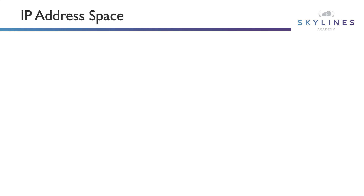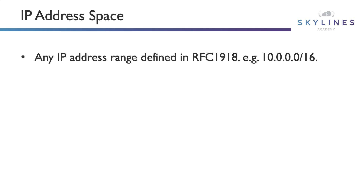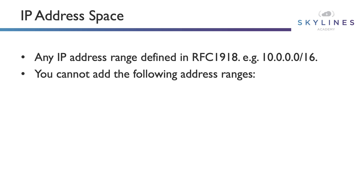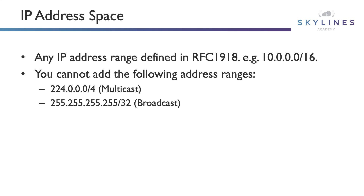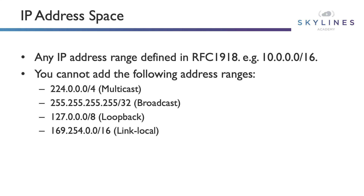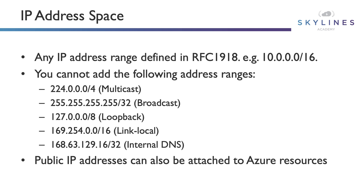Let's now talk about the IP address space in a little bit more detail. Any IP address range defined in RFC 1918 — for example, 10.0.0.0/16 — is the standard address space you're familiar with from existing networking concepts. You cannot add the following address ranges: 224.0.0.0/4, which is the multicast address; the broadcast address 255.255.255.255; the loopback address 127.0.0.0; 169.254.0.0, the link local address; and 168.63.129.16 for internal DNS. Public IP addresses can also be attached to your Azure resources in addition to the private space you're creating in the VNet and subnets.